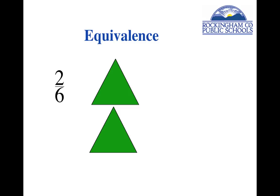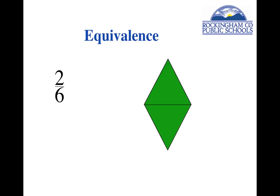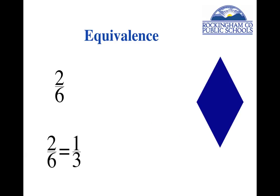Let's talk about equivalence — something we certainly want to teach students. Two sixths: grab two of the green triangles, because the six tells you it's a triangle and the two tells you how many pieces. You can see that if you turn those in this direction, they make exactly the same shape as one blue rhombus. So two sixths is equivalent to one third — it occupies the same space, takes up the same amount.